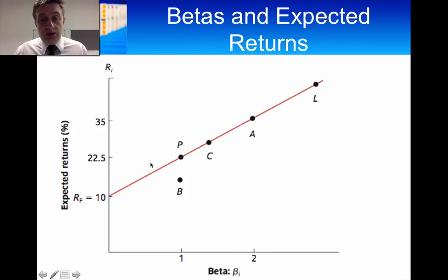Another way you could actually create this portfolio is by borrowing, having a negative weight on the risk-free portfolio, and investing that additional money on portfolio P to take you up to portfolio C. So these are correctly priced portfolios because they appear on this line.